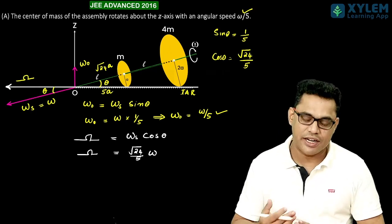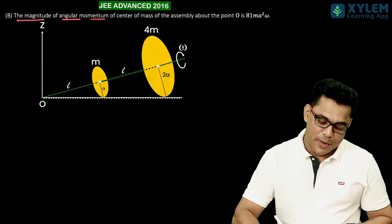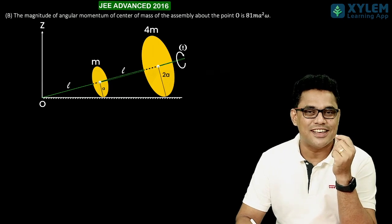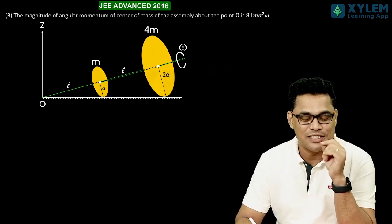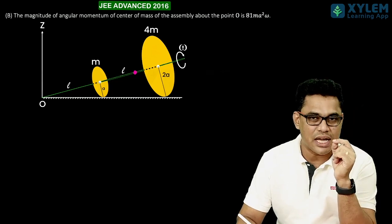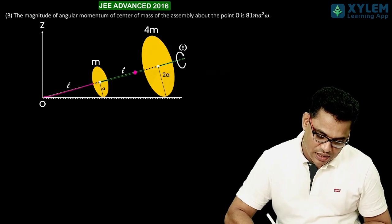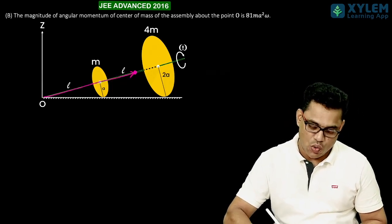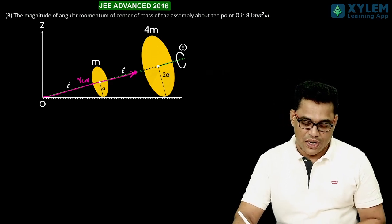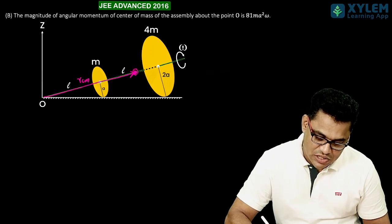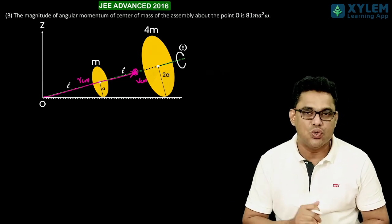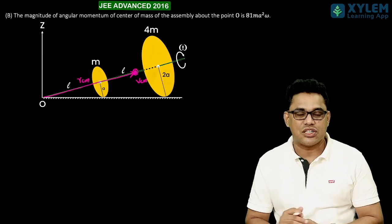Now option B: the magnitude of angular momentum of the center of mass of the assembly about the point O is 81 m a² omega. This is the most difficult option to crack. To find the angular momentum, we must first find the position vector of the center of mass relative to O (RCM), and also the velocity of the center of mass (VCM). In this instant, VCM is directed into the screen. Knowing both RCM and VCM, we can find the direction of angular momentum via RCM cross VCM.